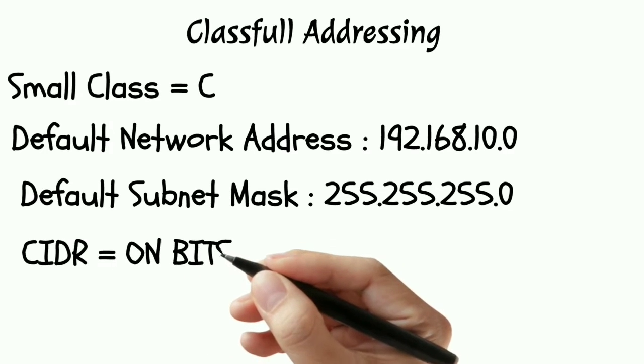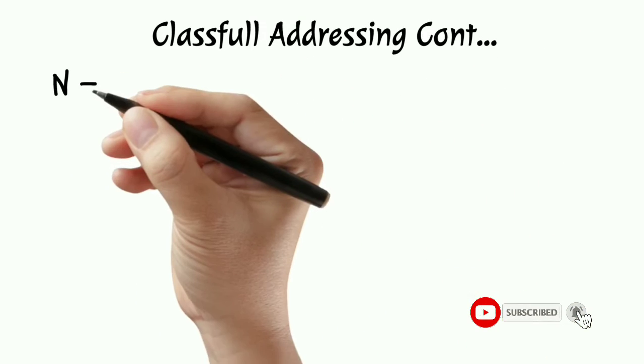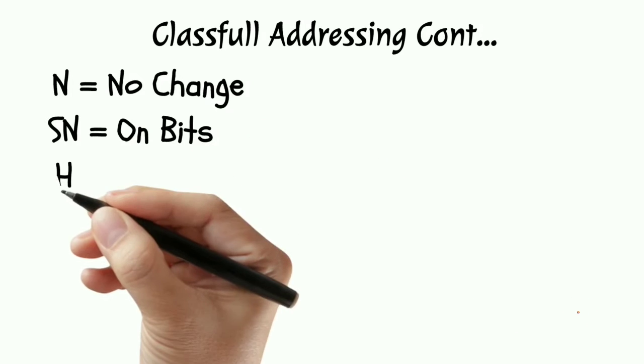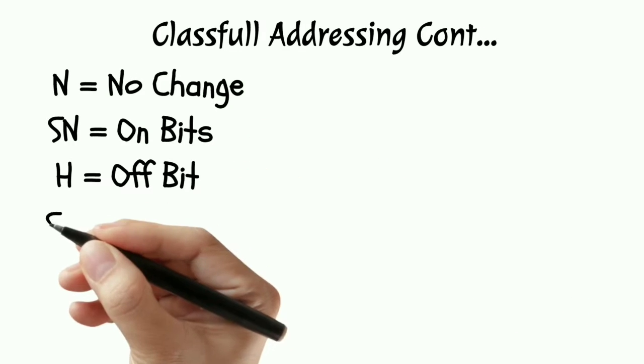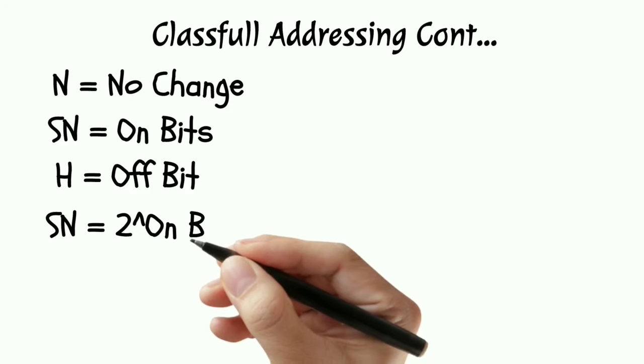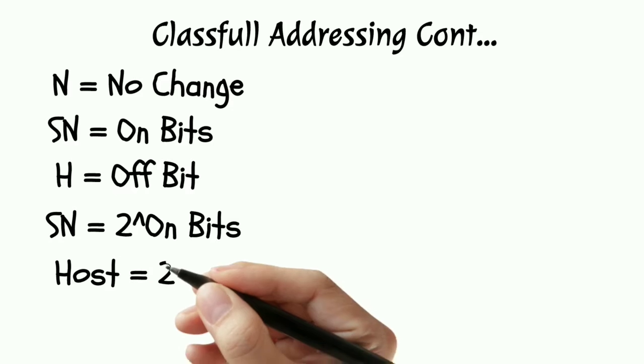CIDR is calculated on on bits. There is no change in the network address. Subnetwork is calculated on on bits. Host is calculated on off bits. Subnetwork is calculated by 2 to the power on bits formula.